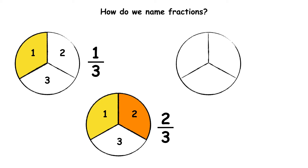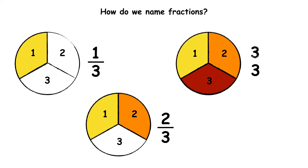This circle has also been cut into three equal pieces. I have coloured in three pieces out of three. When we have three pieces out of a possible three, we have three-thirds, which is the same as one whole.